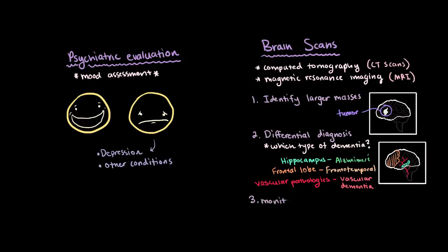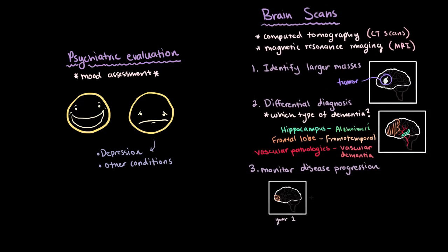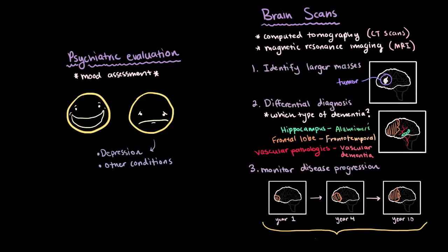And another reason for a brain scan might be to monitor disease progression. Several imaging sessions over several years might show how the brain has changed over time. More atrophy might be indicative of disease progression. Whereas, if the atrophy has stayed the same over time, it might suggest that a different or a more static cognitive disease is at play.